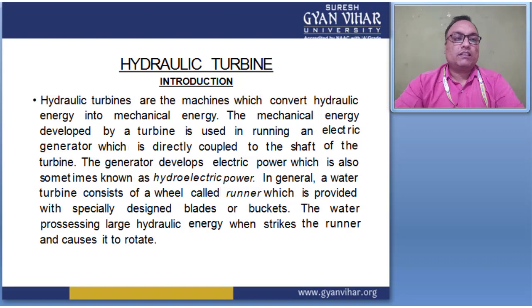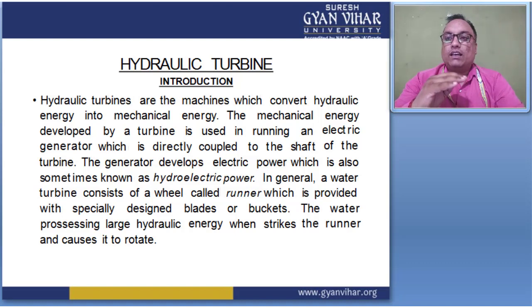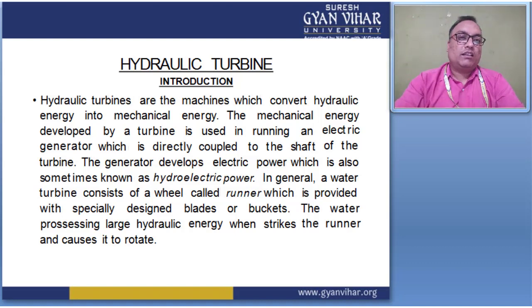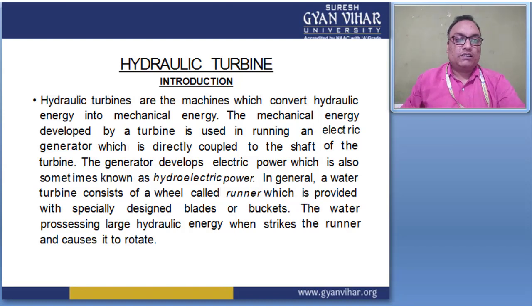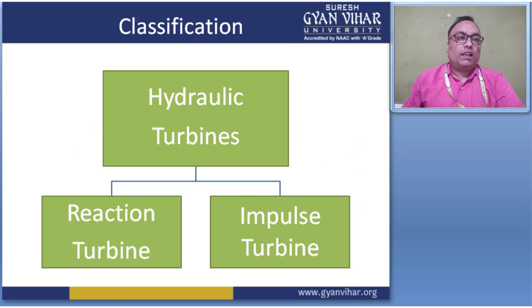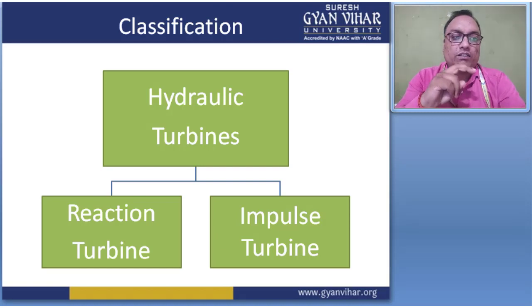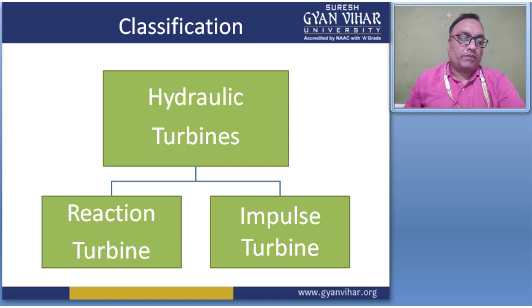Turbine operating parameters include different types such as rotational speed and physiometric head. These terms will be discussed one by one in this chapter. Hydraulic turbines are mainly divided into two groups: the first is reaction turbine and the second is impulse turbine. These two groups are divided by different kinds of characteristics.